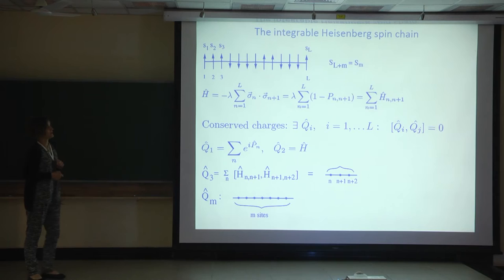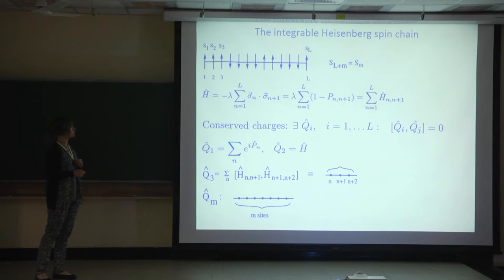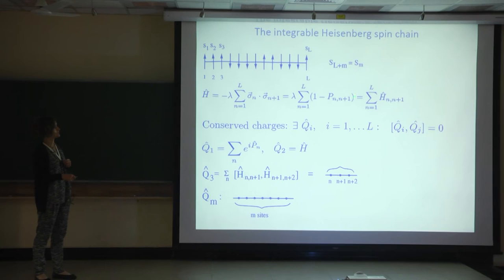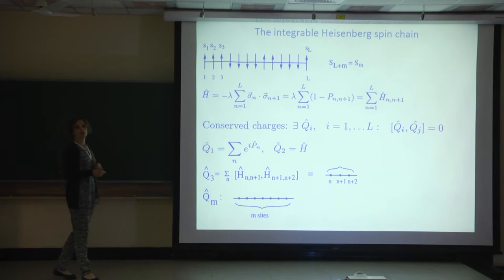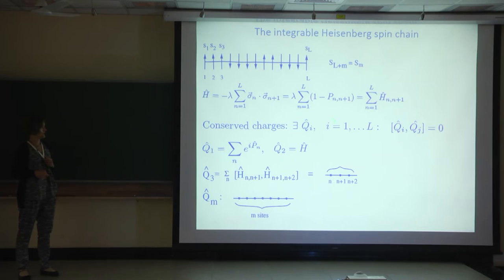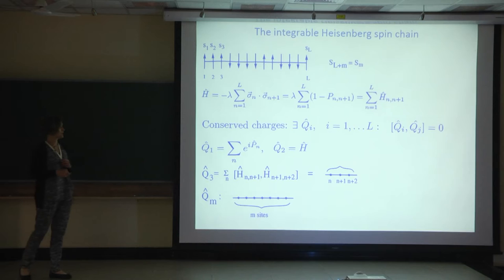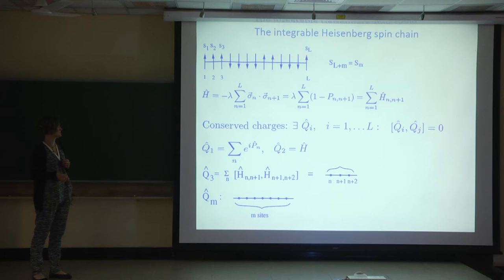The Heisenberg spin chain is a one-dimensional quantum mechanical system—a one-dimensional lattice where at each lattice site lives a spin-one-half variable. Its Hamiltonian is given by an expression involving Pauli matrices, or it can be written in terms of permutations where P_{N,N+1} permutes the spins at sites N and N+1. To solve the model we determine its eigenvalues and eigenvectors using strong methods, since it's an integrable system with a tower of higher conserved charges that commute with each other and with the Hamiltonian. The first charge relates to total momentum, the second is the Hamiltonian itself, and higher charges involve more and more neighbors.